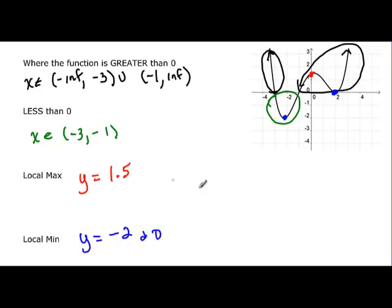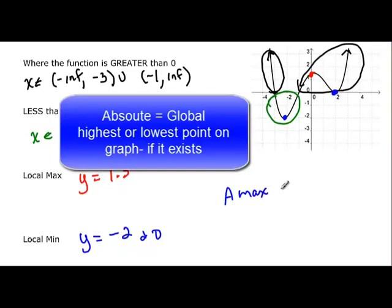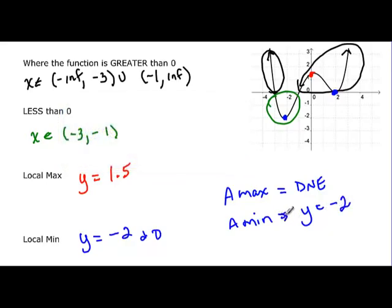And then finally, it doesn't say it in there, but the absolute max doesn't exist because it goes to infinity on either end. But there is an absolute min, and the absolute min would be y equal this one right here. That's the lowest point that graph gets to, so y equal negative 2.